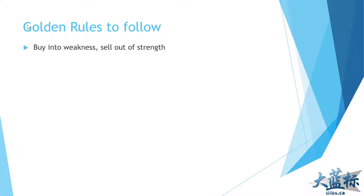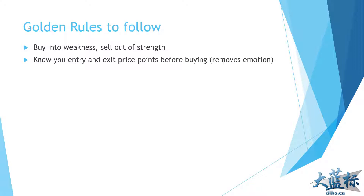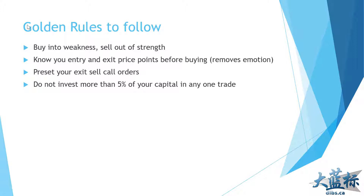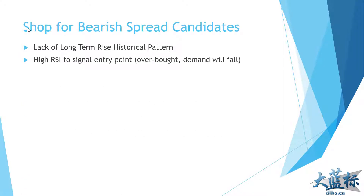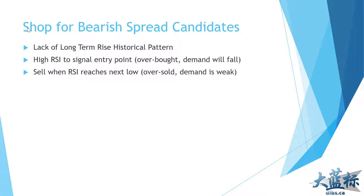Golden rules to follow: buy into weakness, sell out of strength. Know your entry and exit points before you buy to remove emotion, and preset your exit borders. Never invest more than 5% of your capital in any one trade. When shopping for bearish spread candidates, look for stocks lacking a long-term rising price pattern. Ideally enter when RSI is high — meaning overbought and due for profit-taking — so demand falls and prices drop. Exit when price is hitting the low, suggesting it's going to turn back the other way, depending on how long or short your spread is.